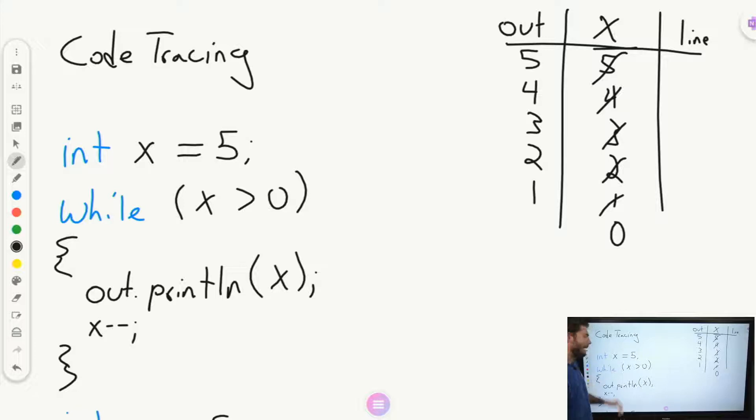And we check, is x bigger than 0 when it's 0? No, x is not bigger than 0 when it's 0. So this fails. This now becomes false. And we move on down the code to our next program. So in this case, our last thing that we print is the number 1. But x has a value of 0. An important thing to remember: the value of x is different than what prints the last run through.